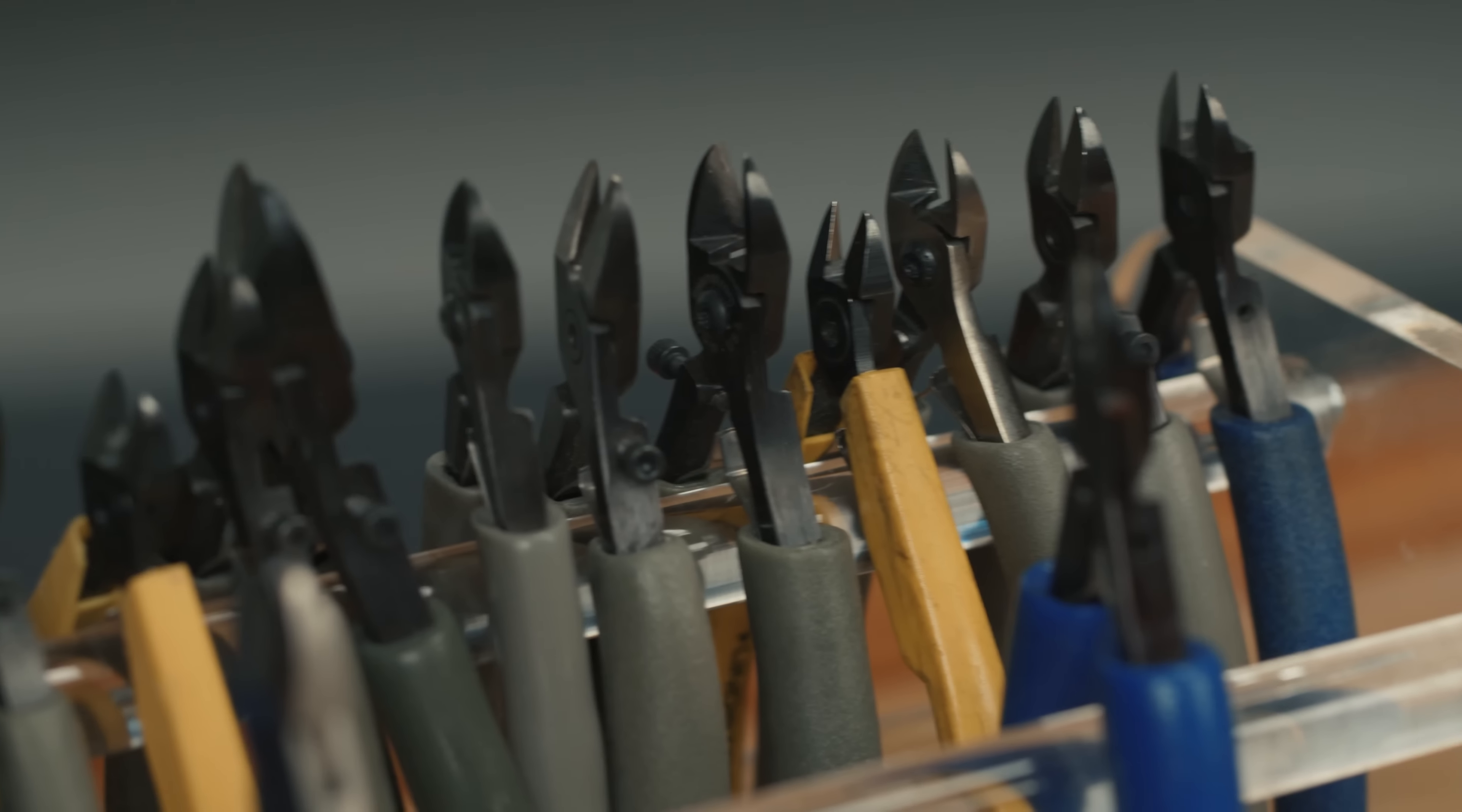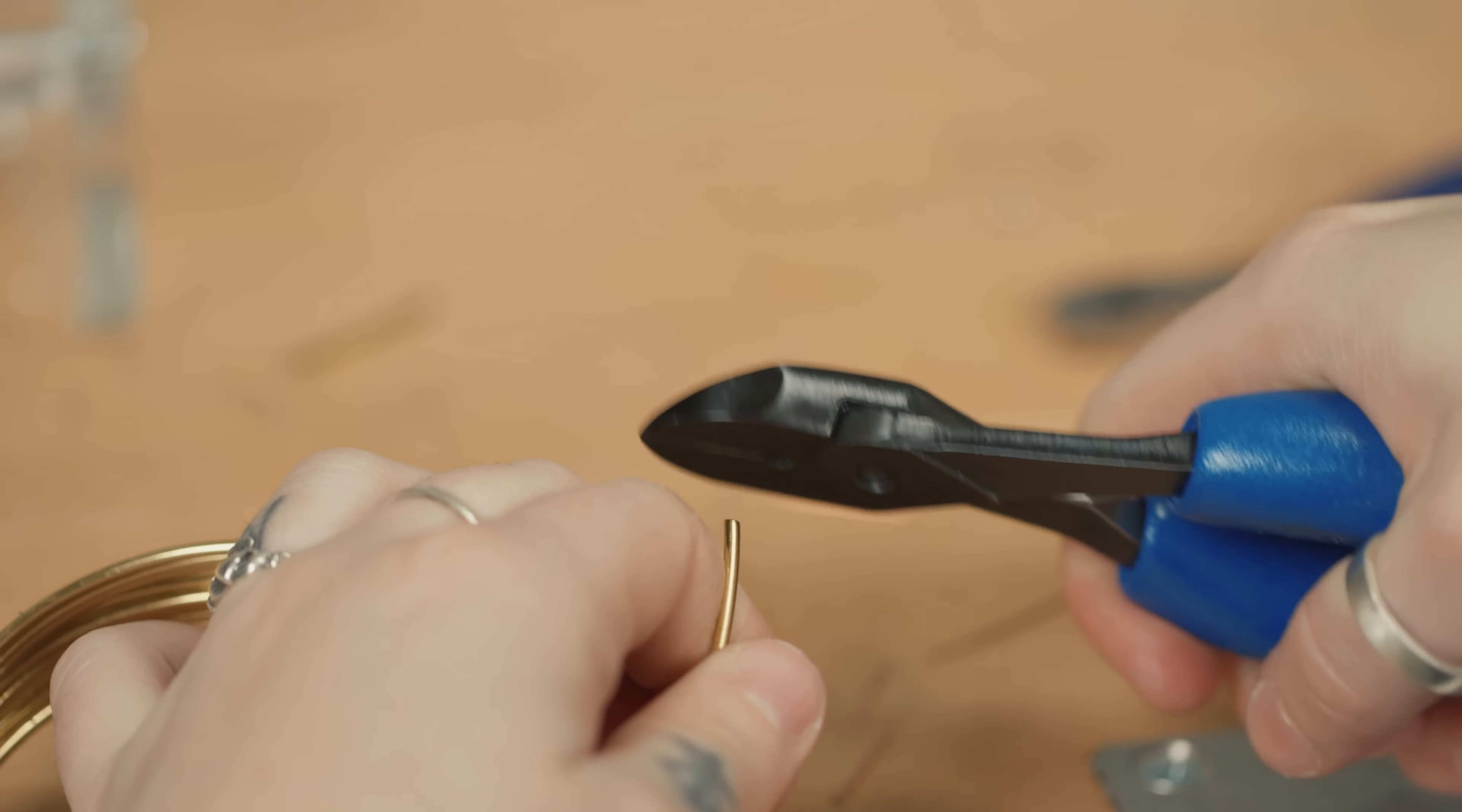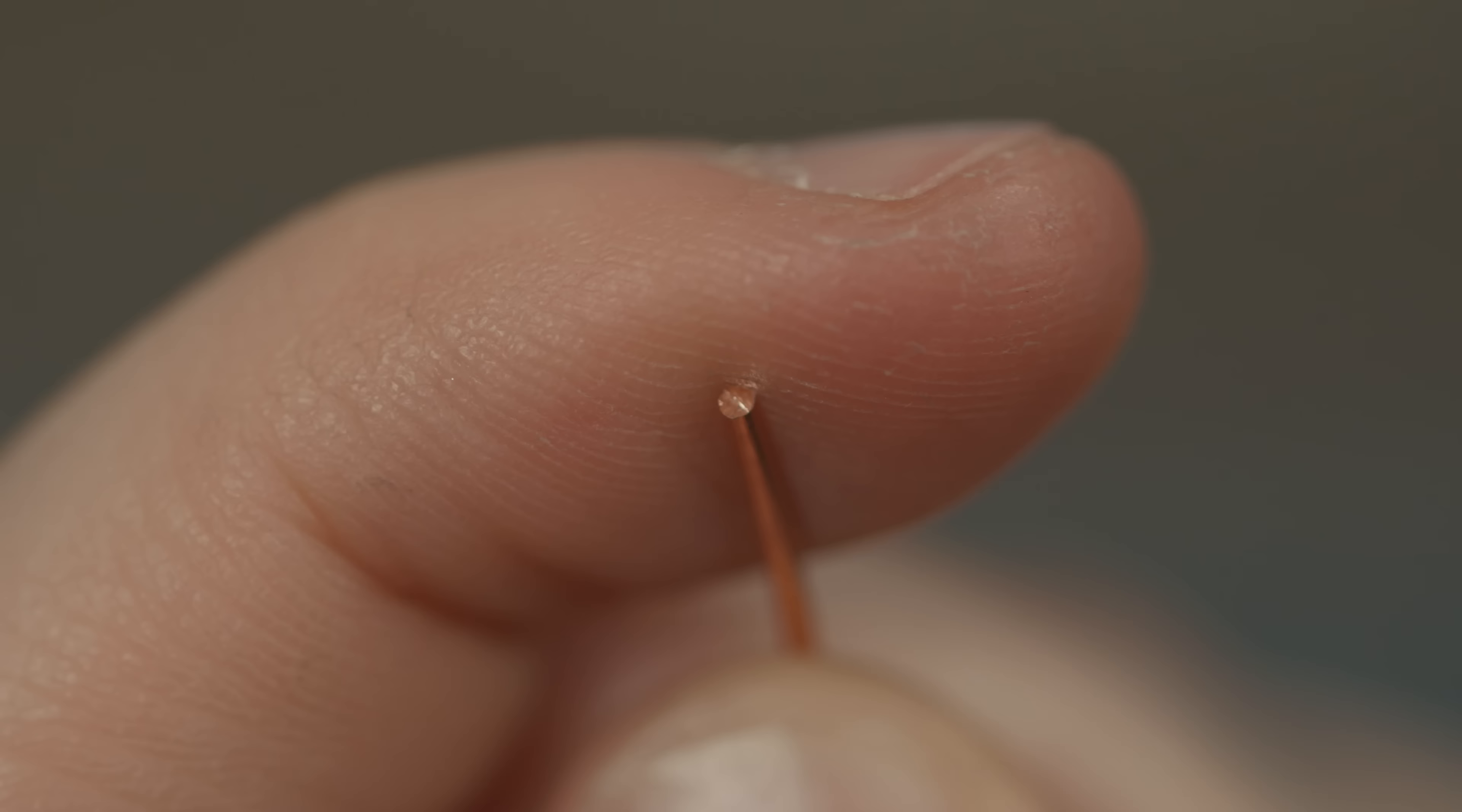Cutters can be flush, super flush, and ultra flush. Those will determine the beveled end cut of the wire that we'll have left behind from the cutter.